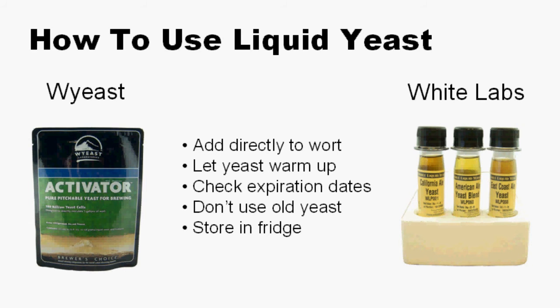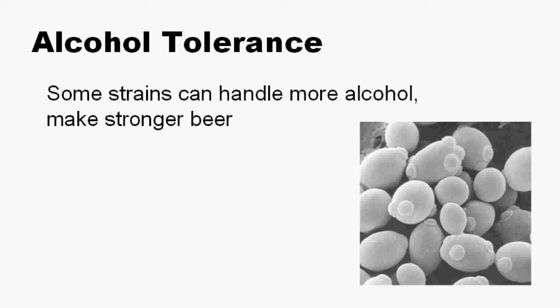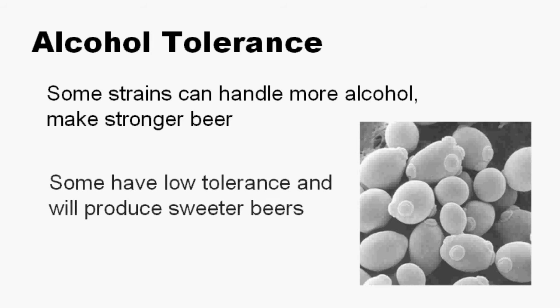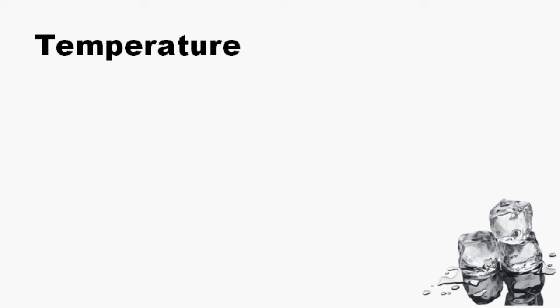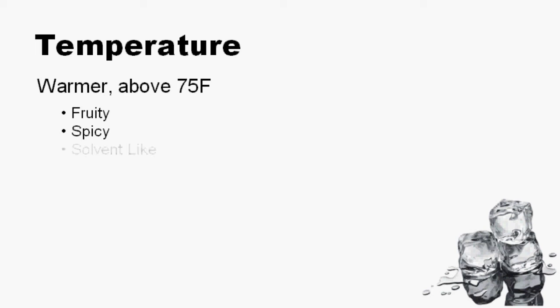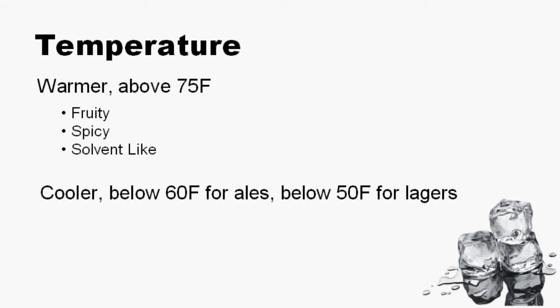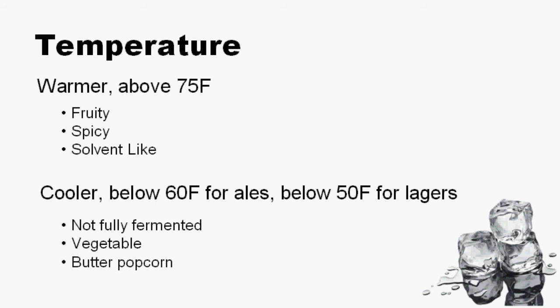Because yeast is alive, it has specific tolerances to survive. Yeast is somewhat tolerant to the toxin known as alcohol. Some yeast varieties are more tolerant and can make beers that are stronger. Some yeast can't handle very much alcohol, and they wimp out, making a sweeter beer. Keeping the temperature controlled during fermentation will keep your yeast happy, and they will make clean, good-tasting beer for you. Warmer temperatures, above 75 degrees Fahrenheit, will make beers that have more fruity, spicy, or solvent-like aromas. Cooler temperatures — below 60 degrees Fahrenheit for ales and below 50 degrees Fahrenheit for lagers — can make beers that are not fully fermented, or have vegetable or buttered popcorn aromas.